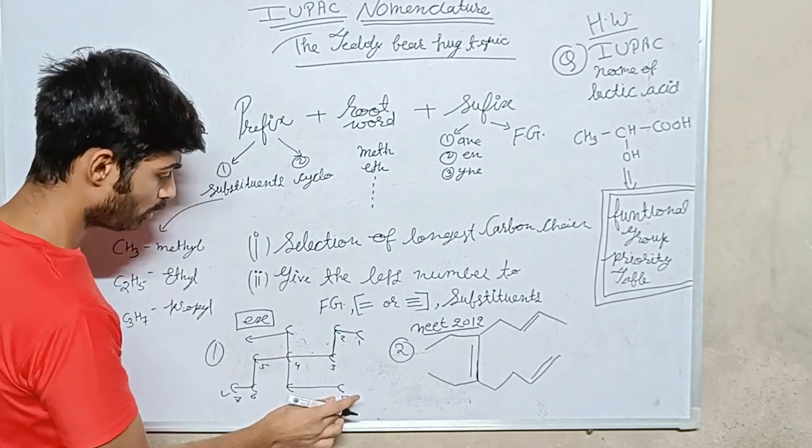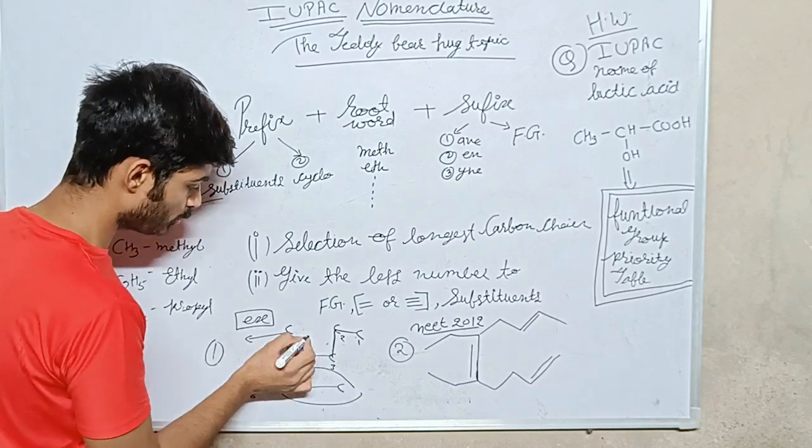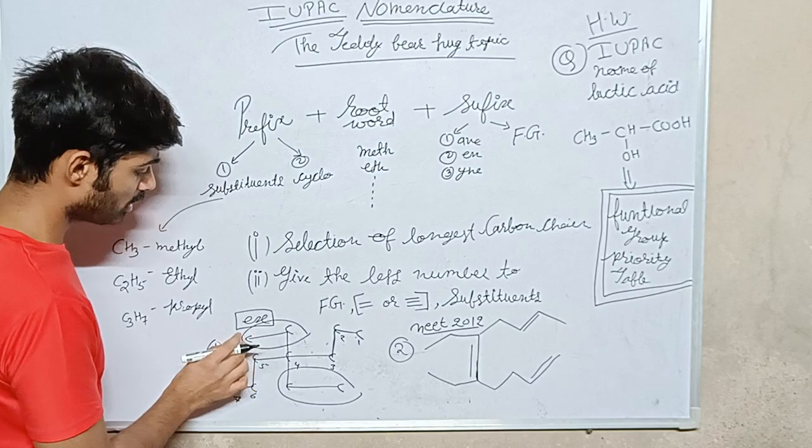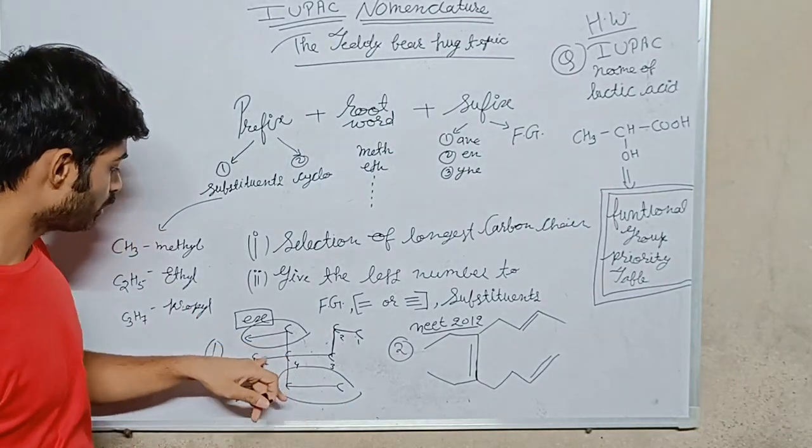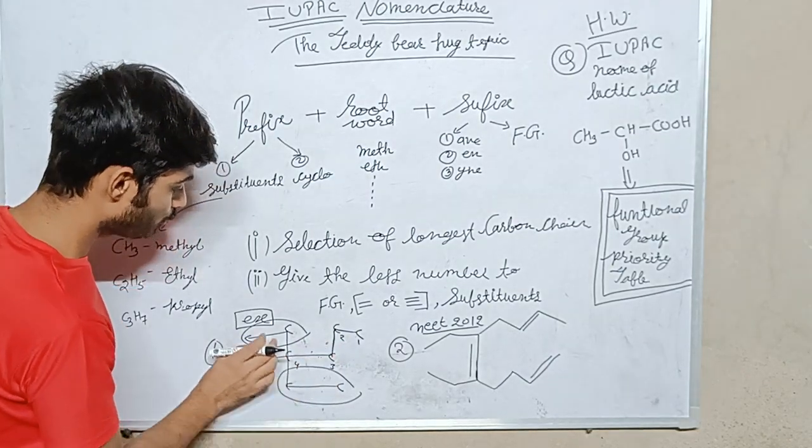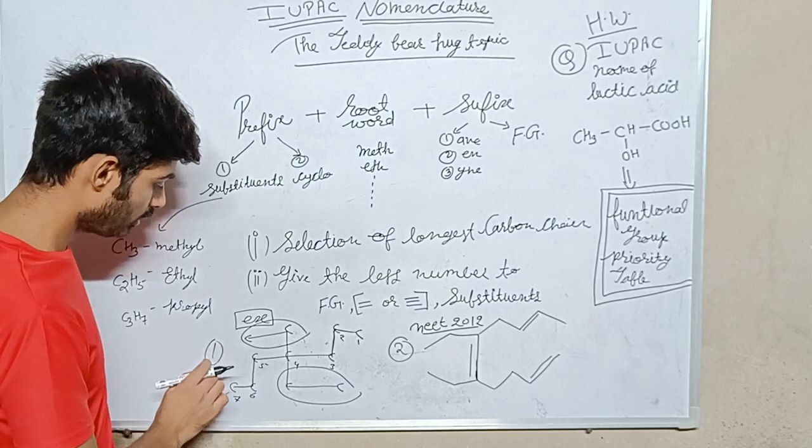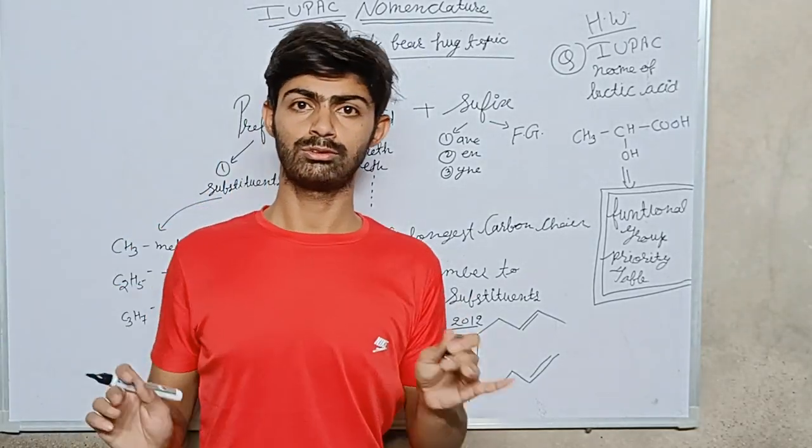Okay, so these two are my substituents, and these contain two carbons, so these are ethyl. Here this compound name is 1, 2, 3, 4, 4-diethyl—seven carbons containing—so 4,4-diethylheptane. It's very simple. Second is a question from NEET 2012. I will give the numbering: 1,